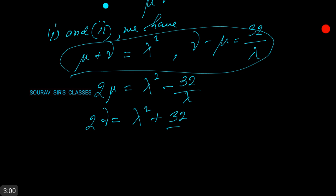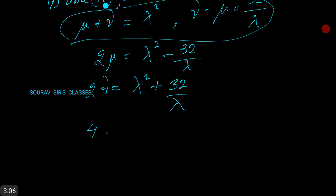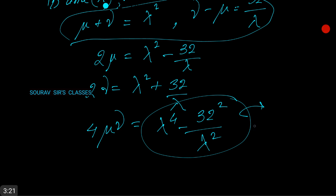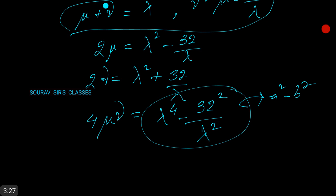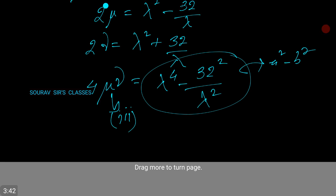Now we have 4 into mu into nu is equal to lambda to the power 4 minus 32 squared by lambda squared. Using the a squared minus b squared formula, and on solving by substituting this from equation number 3, we have...